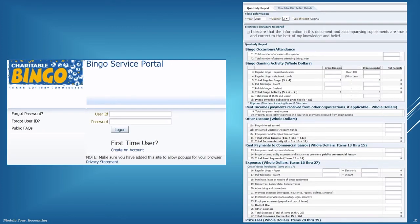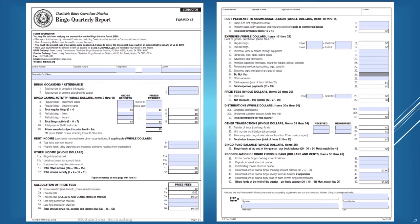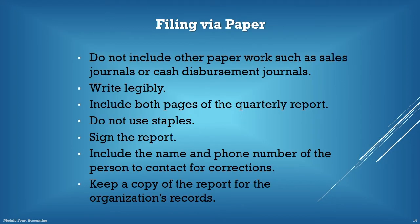This shows the login screen of the BSP and an example of what the quarterly report will look like when you log in and prepare the file. This is an example of the Bingo quarterly report available on our website. When submitting a quarterly report, sign the bottom of the second page. The person signing the report is declaring that the information is true and correct, and must promptly provide a copy of the quarterly report to an officer or director upon request. Keep a copy of the quarterly report for the organization records.